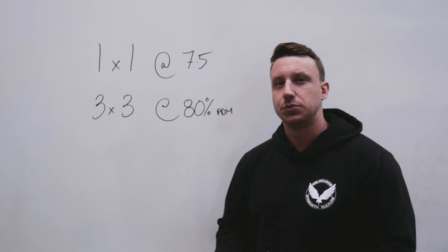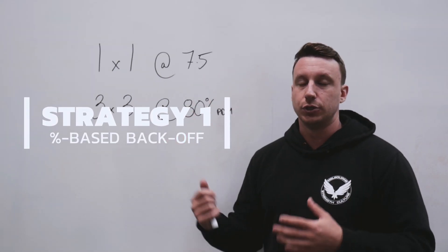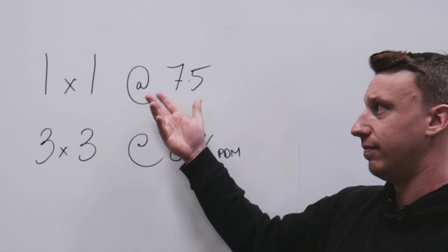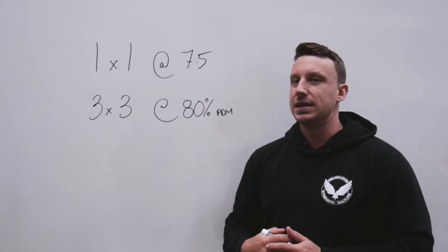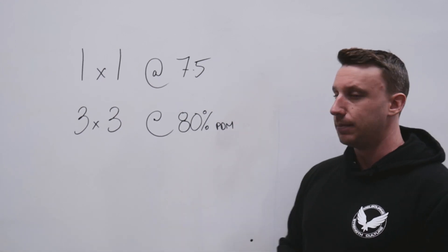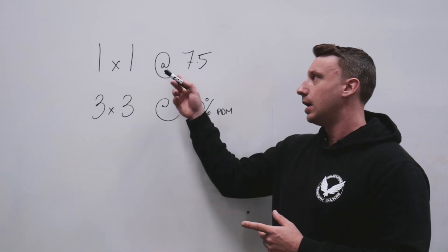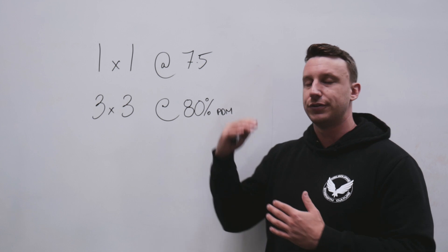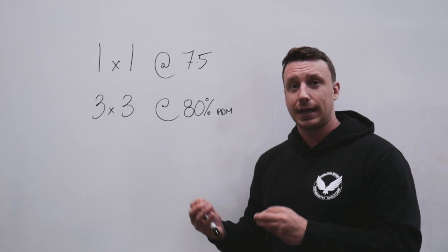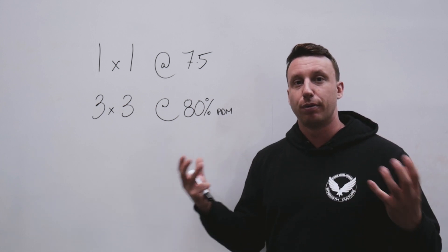Now that we know why it's beneficial to use Top Sets, how would that typically look and how are most programs built around Top Set training? This would be probably the most common way we prescribe it here at Melbourne Strength Culture. Typically you'll have a Top Set at an RPE-based prescription — in this example, one set of one at RPE 7.5. Then your back-offs will be a percentage of the predicted daily max, here shown as a 3x3 at 80% of PDM. The PDM is calculated simply by taking the weight you selected for your Top Set and the RPE that coincided with that set. It doesn't matter if it's an overshoot or undershoot, because the predicted daily max calculation takes all of that data and spits out your predicted daily max as a result.